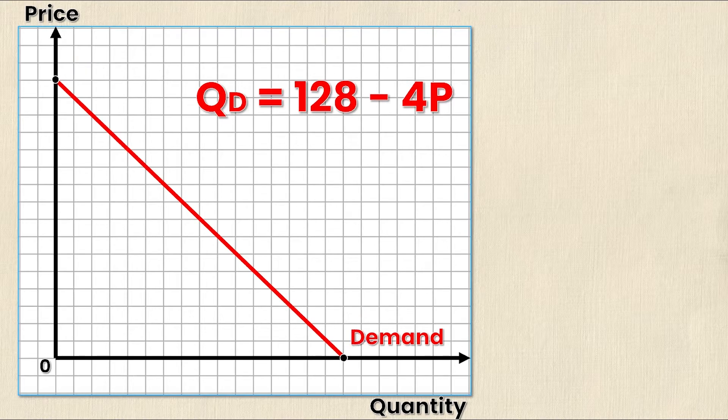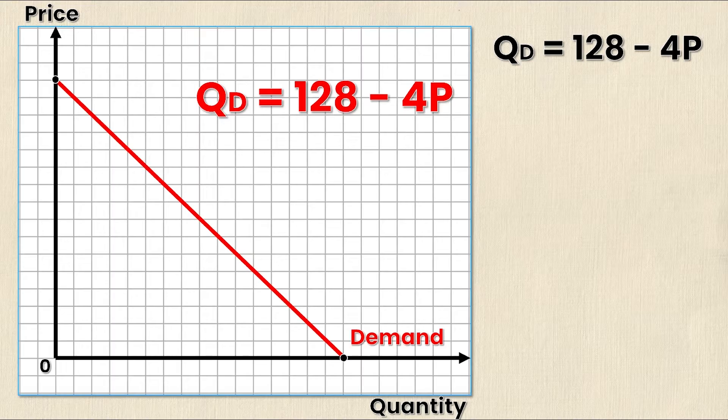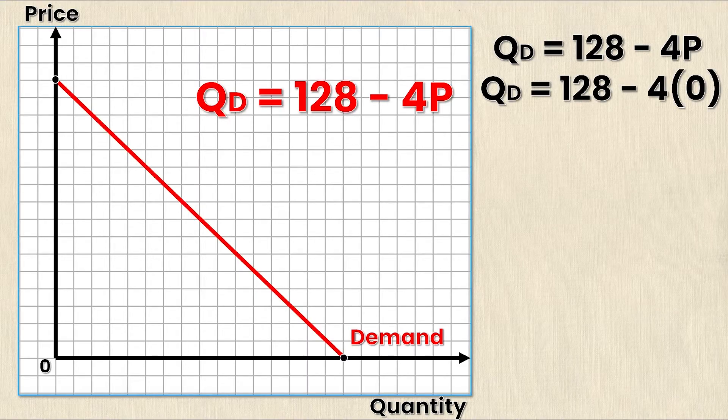To calculate the Q intercept or the x intercept, I'm going to rewrite my original demand equation so Q_D = 128 - 4P. Now if I'm looking for the x intercept then I know that the y value must be zero, and in this case the y is P or price.